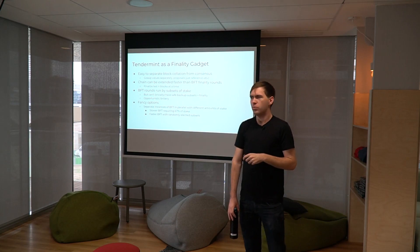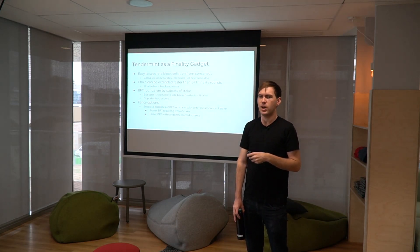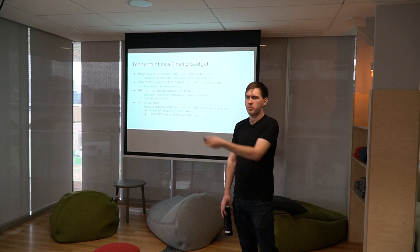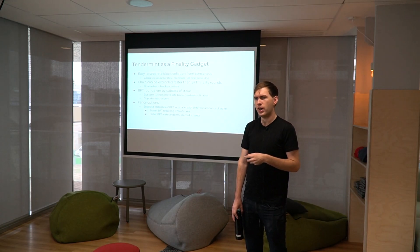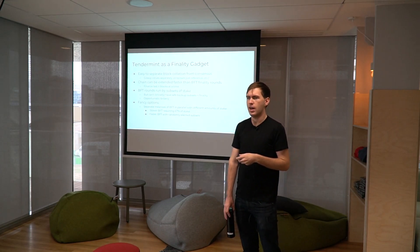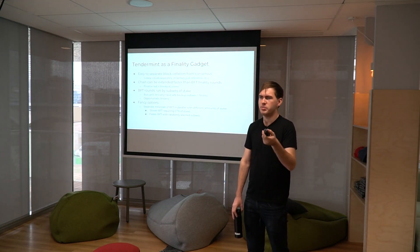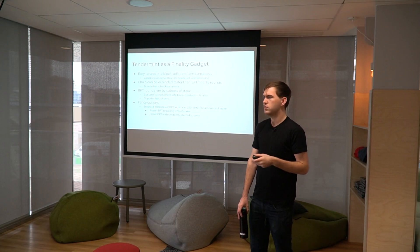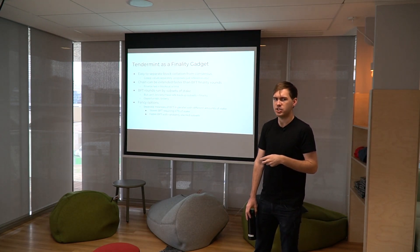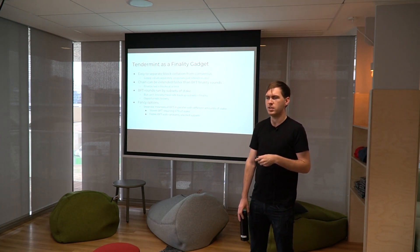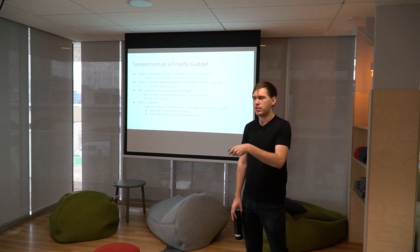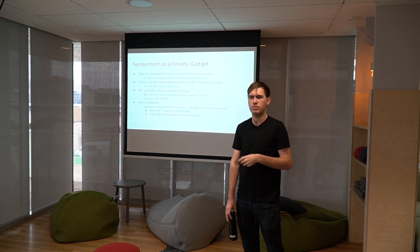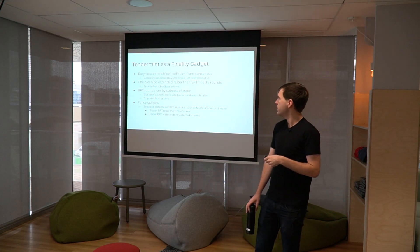We use Tendermint as both a block production system and a finality gadget. The proposal message includes a new value — a new block for a new height — and that value is gossiped in the same gossip as the rest of the consensus messages. Once other nodes receive and finalize it, they apply the transactions in that block to their state. That's how Tendermint works in our implementation.